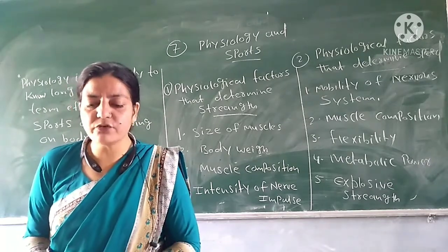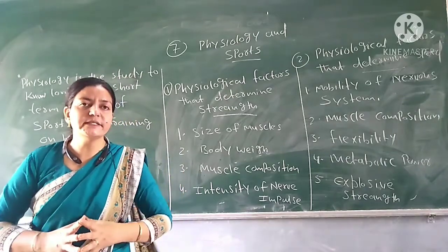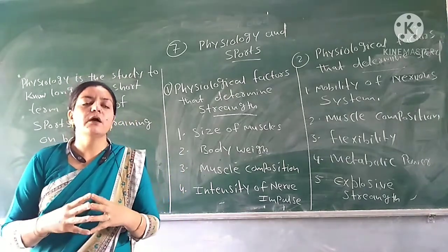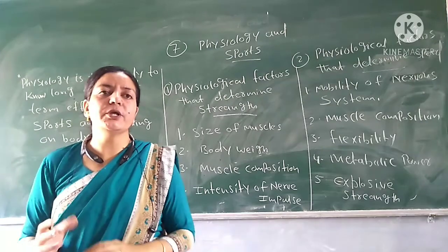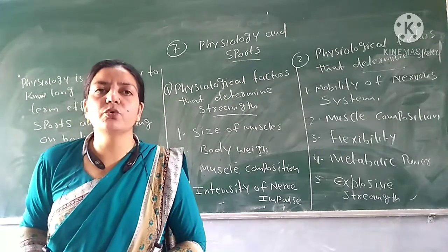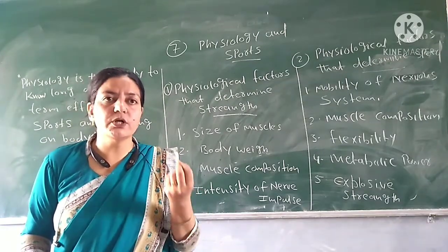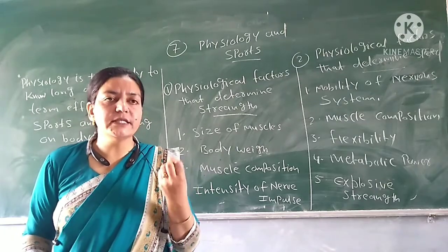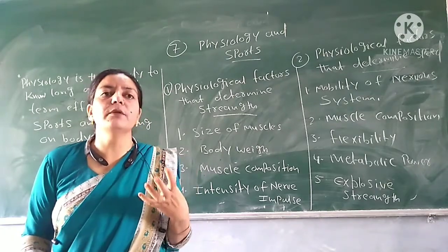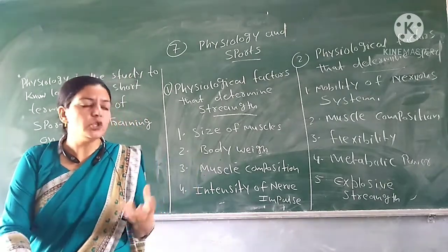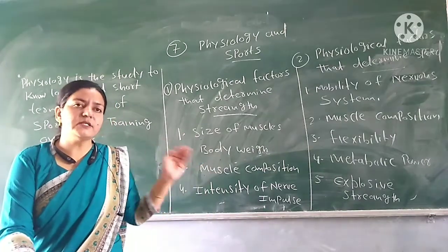The fourth factor is the intensity of nerve impulse. The nerve impulse intensifies the muscle contraction — the greater the intensity of the nerve impulse reaching the muscles, the greater the muscle strength and willpower. These are the four physiological factors that determine our strength.